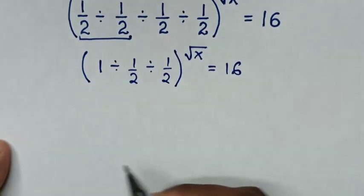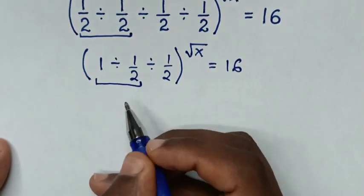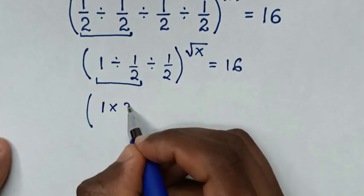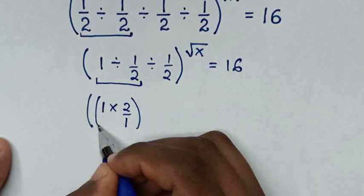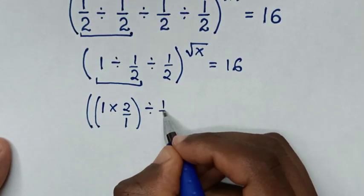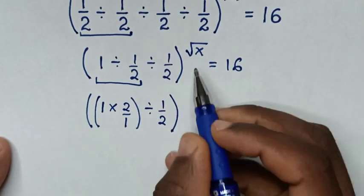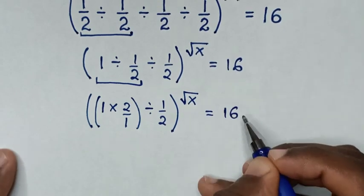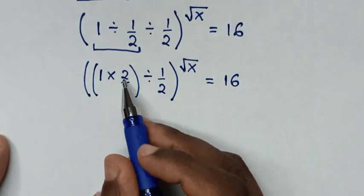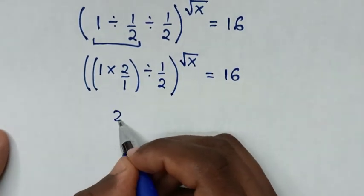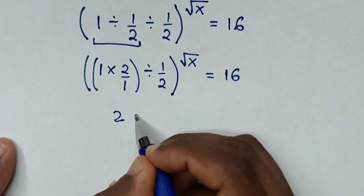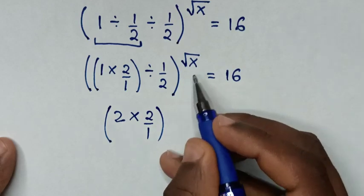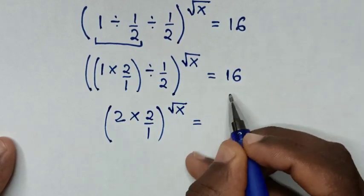Then in the next step we deal again with the first operation. So 1 divided by a half is the same as 1 times 2 over 1, then divided by a half, bracket, to the power of square root of x, equals 16. Then 1 times 2 is 2, and 2 divided by 1 is 2. Now 2 divided by a half is the same as times 2 over 1, to the power of square root of x, equals 16.